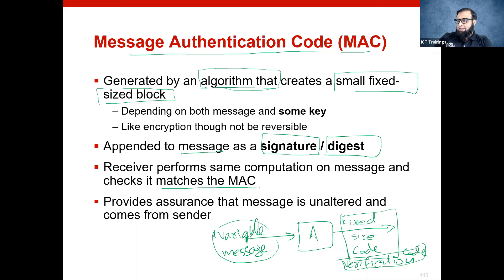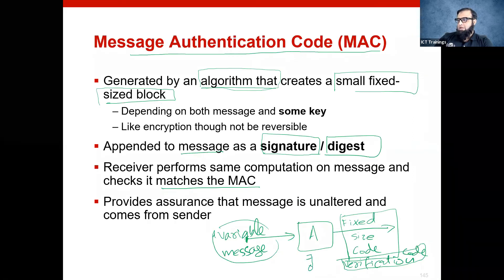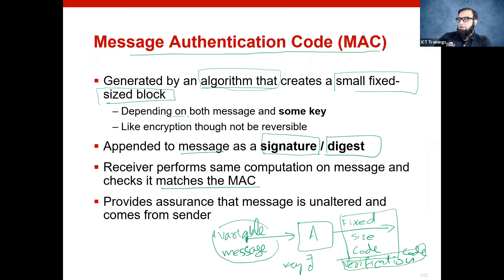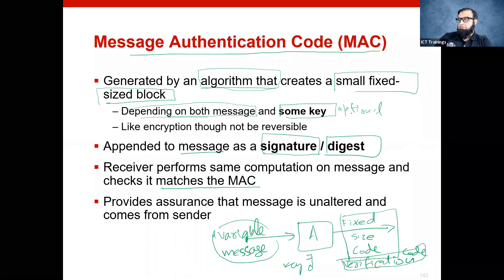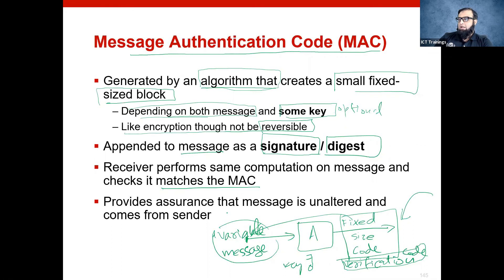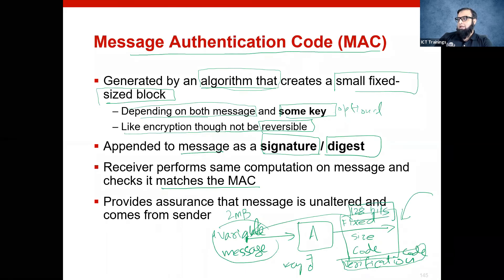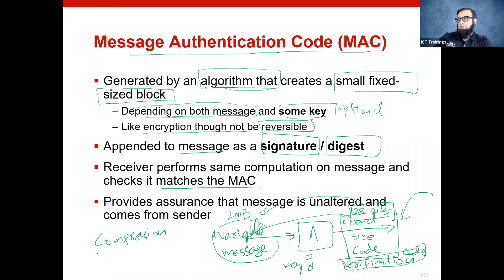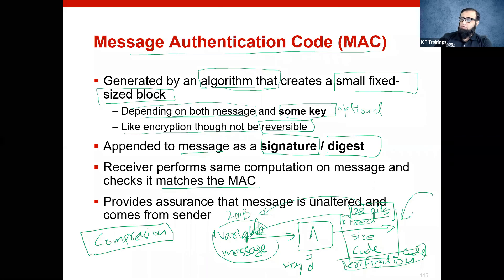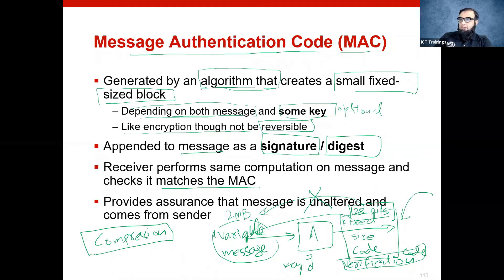Message authentication codes can work without a key, or the algorithm may include a key — it depends on which algorithm you are using. It may depend on message content as well as some key, but this is optional, not mandatory. It is like encryption but it is not reversible — nobody can produce the original data back from it. If you input 2 megabytes of data and get a 128-bit code as output, you cannot extract 2 MB back from 128 bits. An irreversible compression is applied, so original data cannot be decoded — it can only be used for verification purposes.